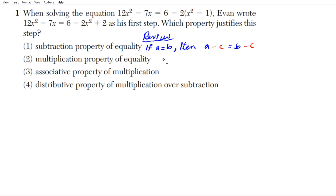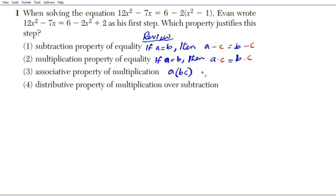The second property is the multiplication property of equality. The associative property basically means that when you're grouping your products, the order in which you group them doesn't matter. So if you're multiplying A times B times C, associating B and C first then multiplying by A gives the same result as multiplying A and B first then multiplying by C.